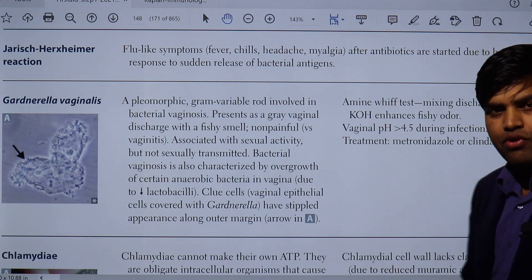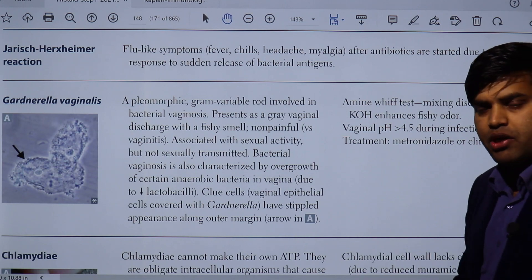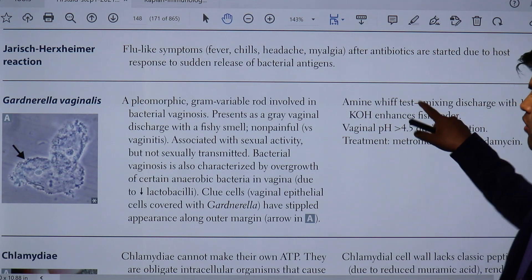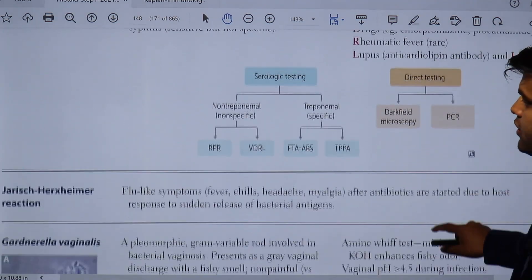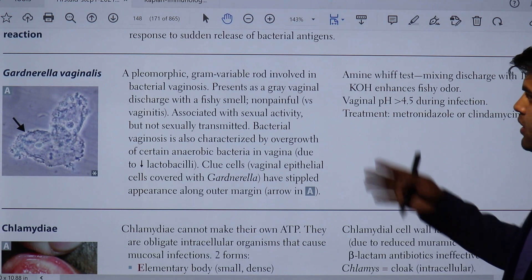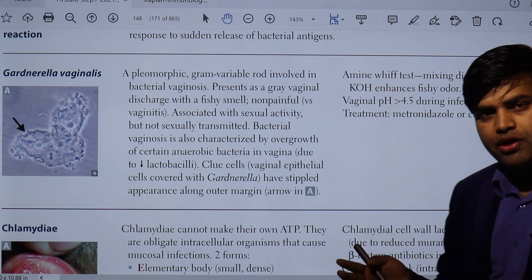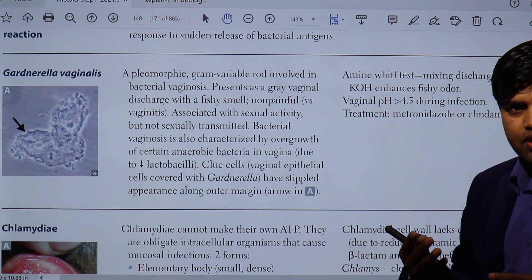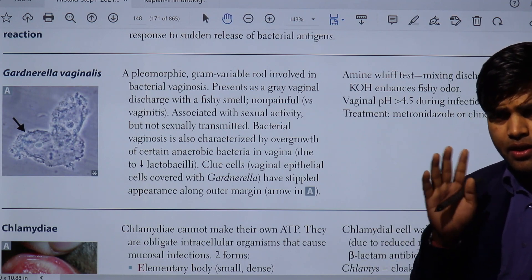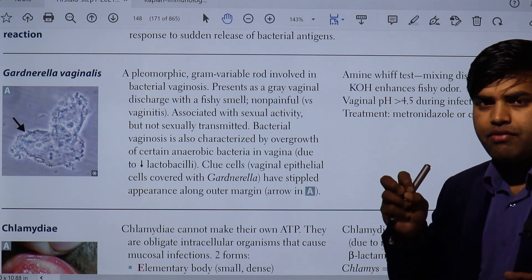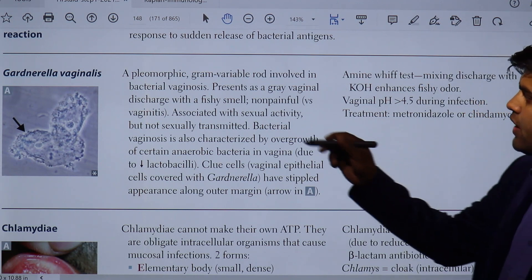Hello and good morning. We are moving forward to revising USMLE Step 1 2021 microbiology. We were previously on page 148 and are continuing on page 148. We previously talked in detail about syphilis — the organism Treponema pallidum causing syphilis — with its different stages. The treatment was straightforward and diagnosis had its main catch points. Now moving forward to Gardnerella vaginalis.